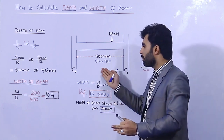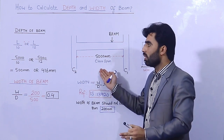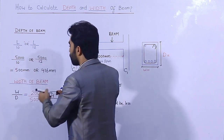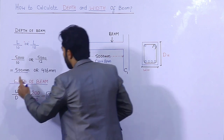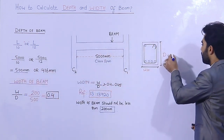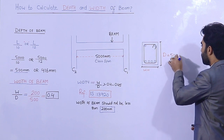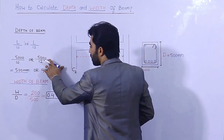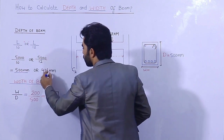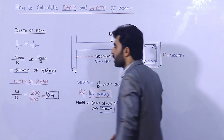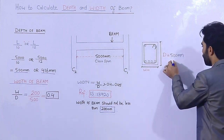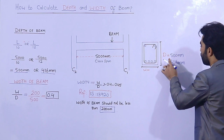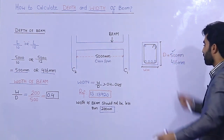So the clear span is 5000 mm. Using L divided by 10: 5000 divided by 10 gives a depth of 500 mm. Alternatively, using L divided by 12: 5000 divided by 12 gives approximately 416 mm. You can take either one of them.